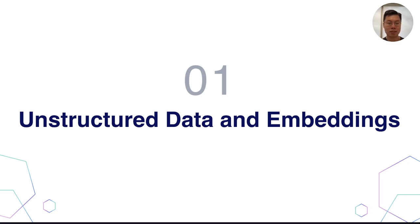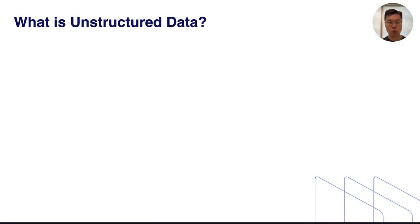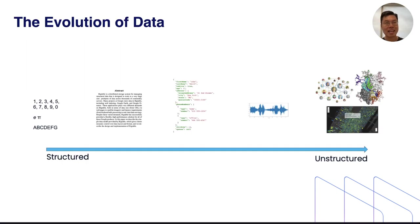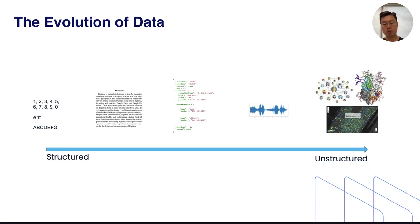Let's start with a question: what is unstructured data? Unstructured data is any data that does not conform to a predefined data model. If we look at the history of data, way back to the 1960s when ENIAC came out, a key motivation for computers was storage, search, and indexing of data. A lot of early data was structured — it could fit into an RDBMS as a table. By the mid-2000s we had document databases like MongoDB, key-value stores like Cassandra.